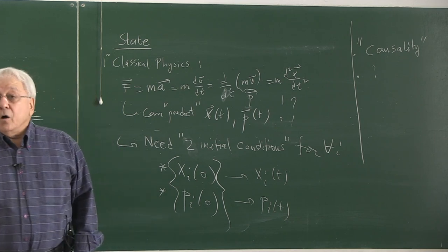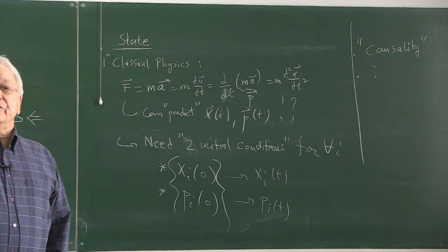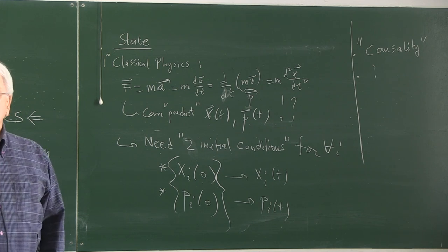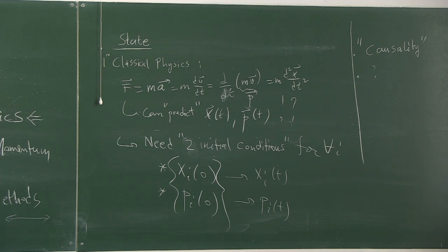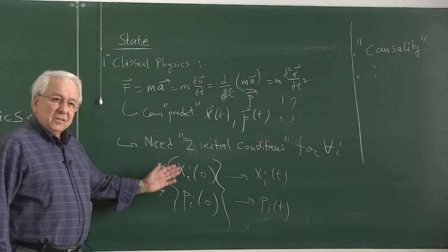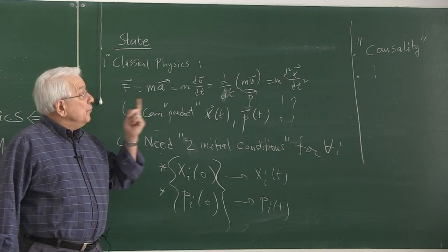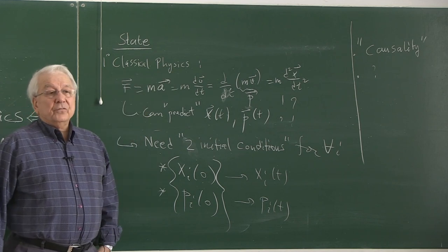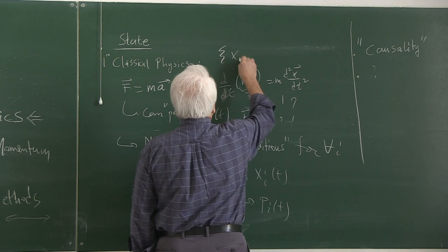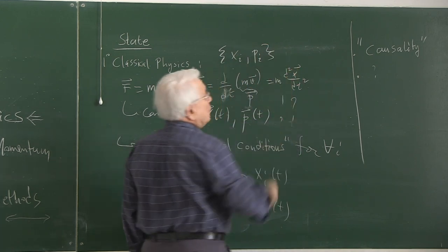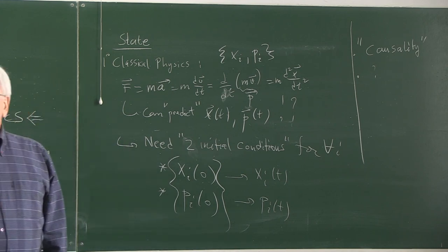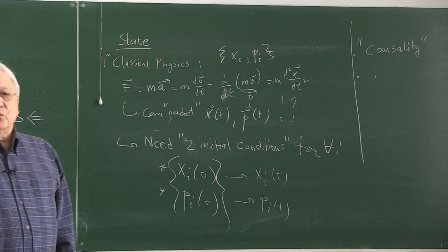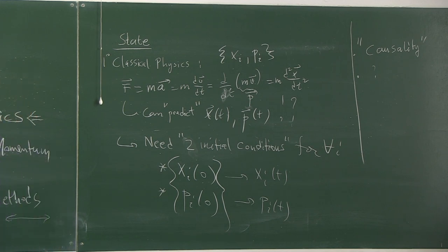I can say that after so many hours, a rocket will be in a particular position near the Moon. I can place it on a particular orbit around the Moon, or Mars, or wherever. So that set of numbers defines the state in classical physics. For a single free particle, x1, x2, x3, p1, p2, p3 — six numbers describe the physical system completely.